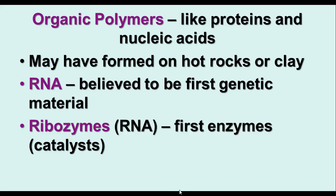The next thing that happened after that was probably the formation of organic polymers, like proteins and nucleic acids, from those smaller molecules. They may have formed on hot rocks or clay. The first genetic material was probably RNA, and there were enzymes called ribozymes, which served as catalysts for various kinds of chemical reactions.